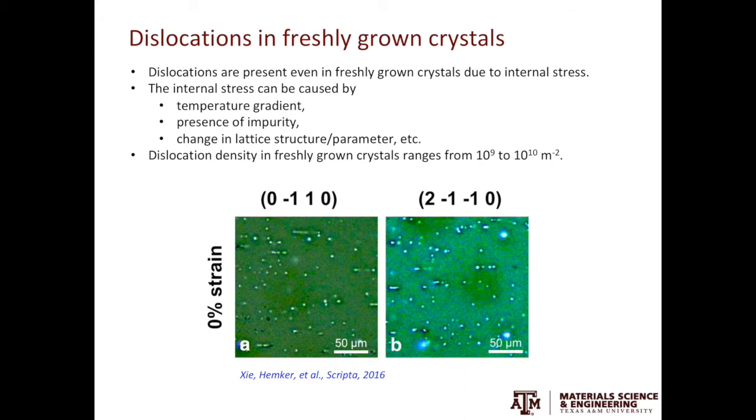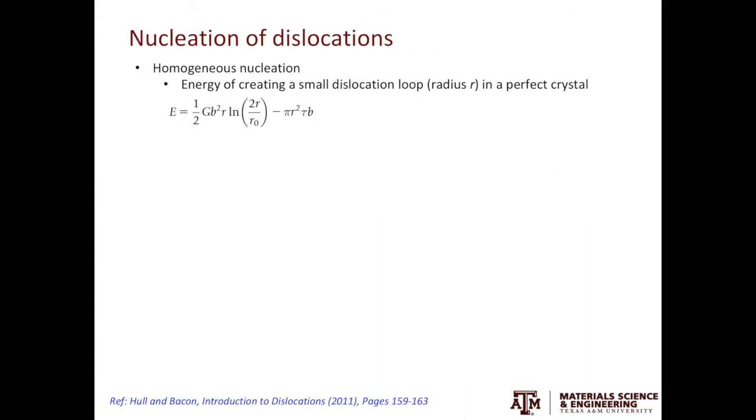Next, we'll look at dislocations formed through plastic deformation. Assume we have a perfect crystal. In order to have the first dislocation, we need to trigger the nucleation event. Whenever we talk about nucleation, we have homogeneous nucleation and heterogeneous nucleation. On this slide, we'll focus on the homogeneous nucleation part.